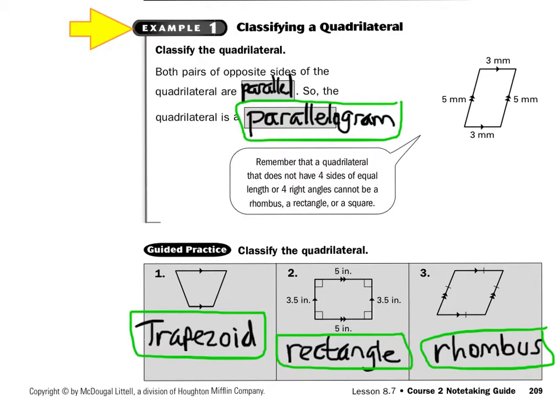Take a look at the guided practice. We have to classify the quadrilaterals — name the best name for them. Look at number one: it has four sides, and notice how the top and the bottom are parallel; they even put that little triangle marker on there. So when it has one pair of parallel sides, it's what we call a trapezoid.